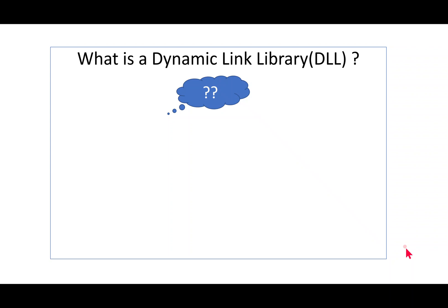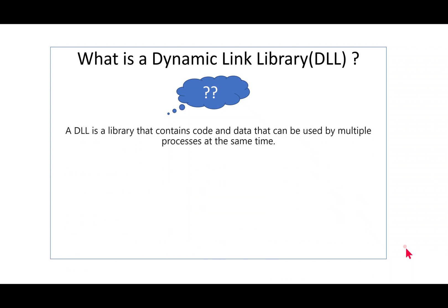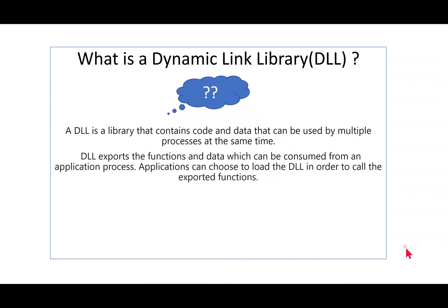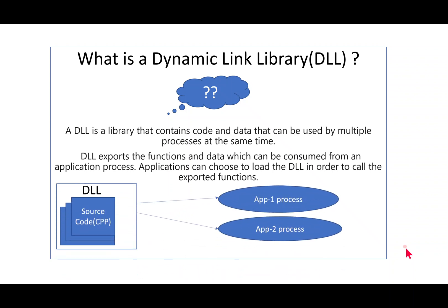So let's understand what a DLL file is and what it contains. A DLL is nothing but a library that contains code and data that can be used by multiple processes at the same time. A DLL basically exports functions and data which can be consumed from an application process. Applications can also choose to load the DLL in order to call these exported functions.